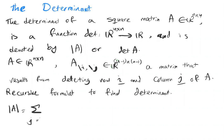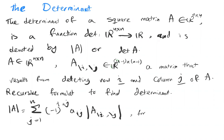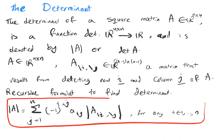This is the recursive definition — it is generic and applies to any square matrix of any dimension. So det(A) = Σ_{j=1}^{n} (−1)^{i+j} A_{ij} det(A with row i and column j removed), for any i from 1 to n.